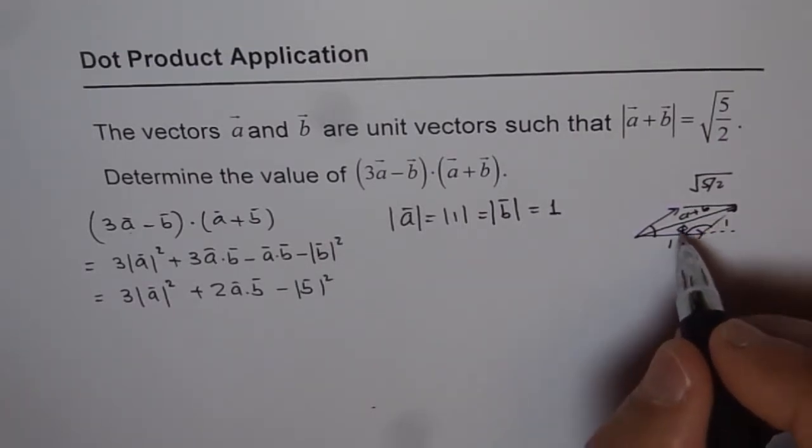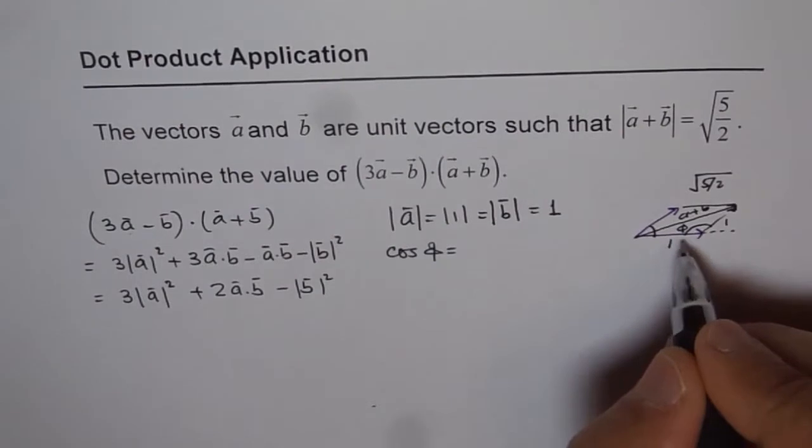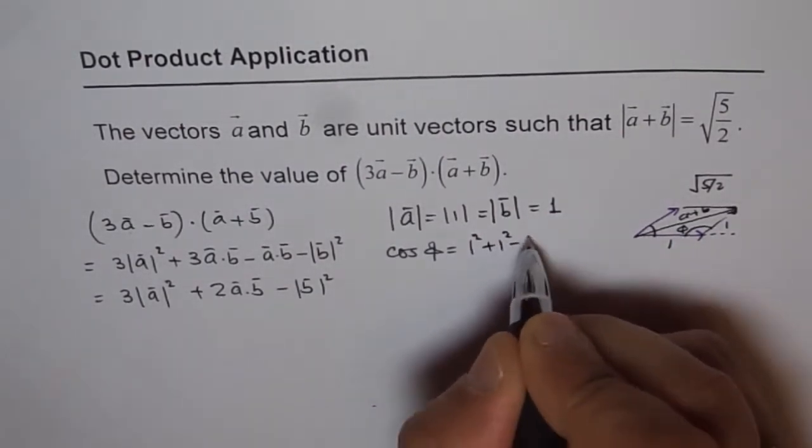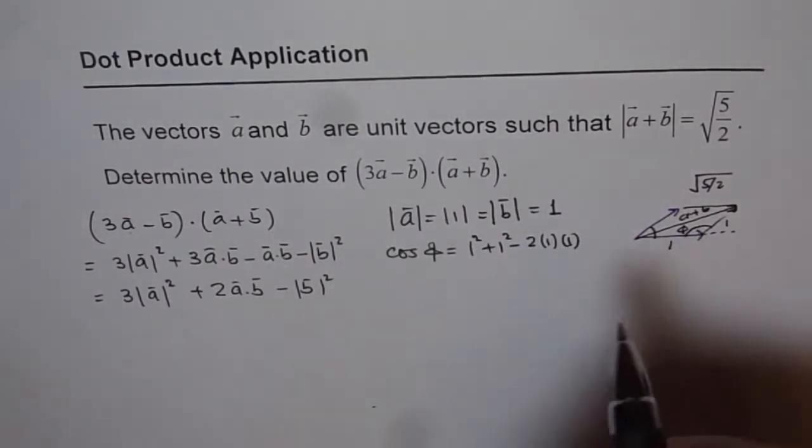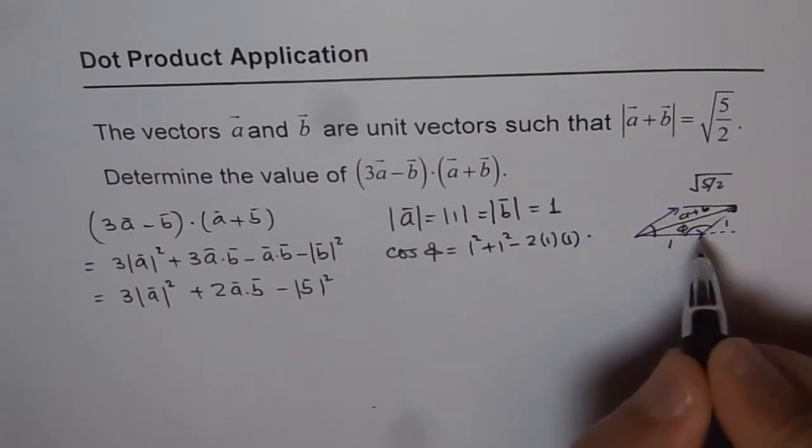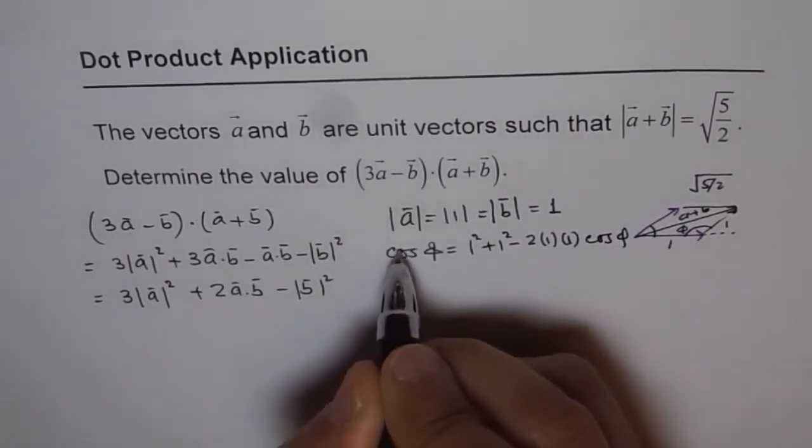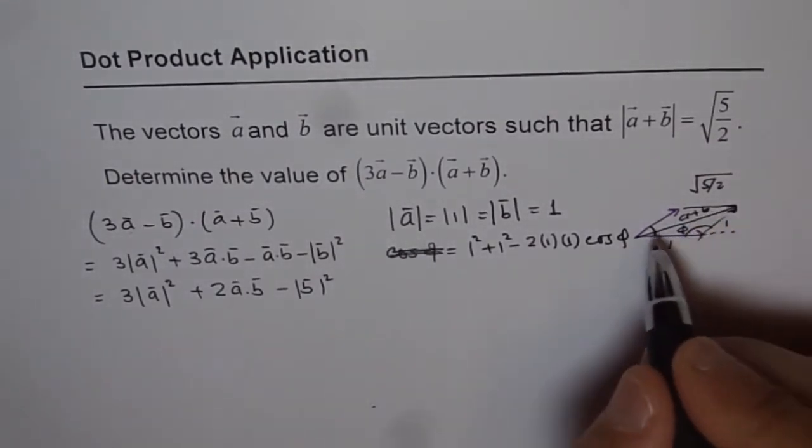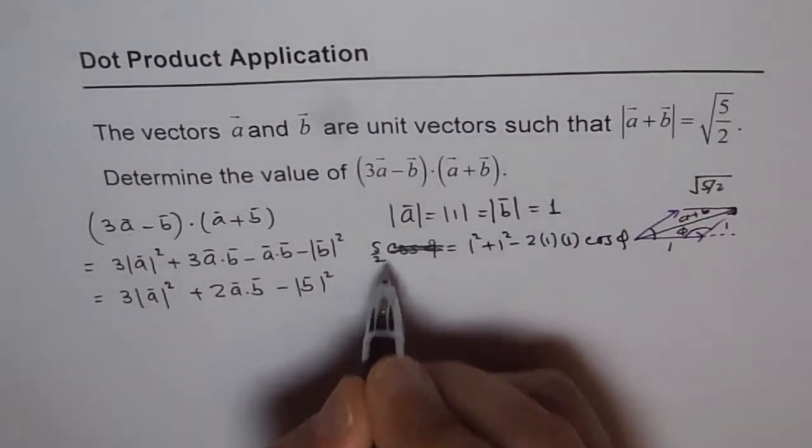So, in that case, use cosine law and find phi. So we get cos of phi equals to a squared plus b squared, which is 1 squared plus 1 squared, minus 2 times 1 times 1 times cos of phi. Actually, I wrote it in the other way. Cos of phi is equal to square of what is given to you. So this is hypotenuse, which is square of this, which is 5 over 2.